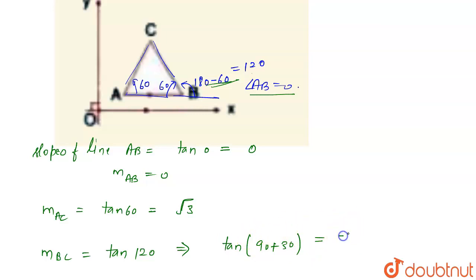So it will become cot 30 degree and cot 30 degree is root 3, so minus root 3. So slope of line AB is 0, slope of line AC is root 3 and slope of line BC is minus root 3.